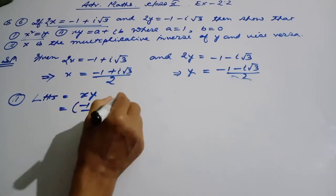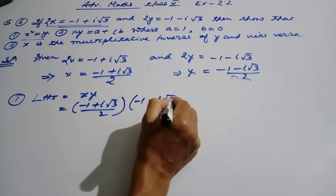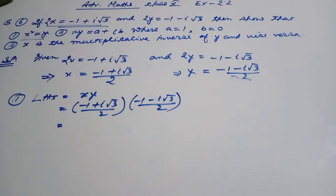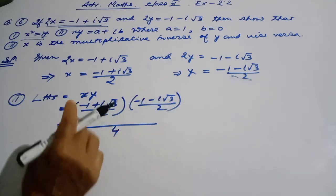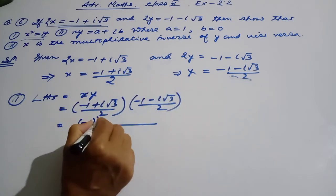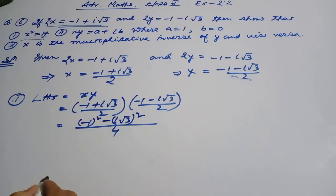X value is minus 1 plus i root 3 divided by 2. Y value is minus 1 minus i root 3 divided by 2. Very to put into it, putting quality of the key.